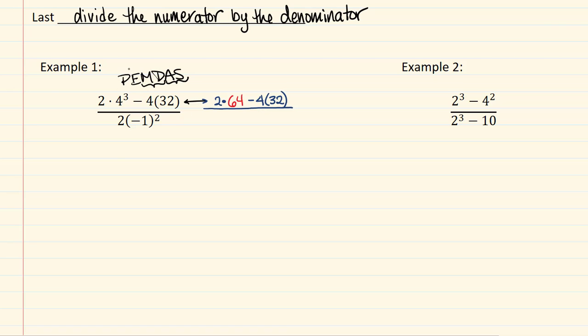So we've looked at parentheses, that's done. We've looked at exponents, that's simplified. Multiplication and division in order from left to right. That means that we need to simplify this 2 times 64 and this negative 4 times 32. That's going to give me 2 times 64 is 120 and then 2 times 4 is 8, so 128.